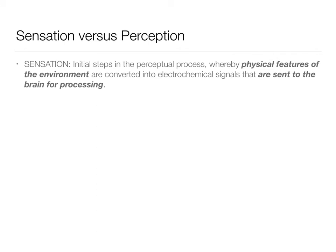So sensation is the physical features of the environment. This can be light, this can be sound, this can be pressure — any number of different things that we'll cover throughout the semester. They're sent to the brain for processing. Sensation is really happening on a very basic level, and it's happening in the sensory receptors themselves — the eyes, the ears, the skin, things like that.